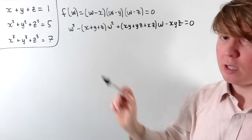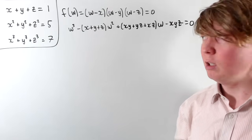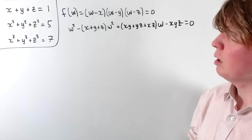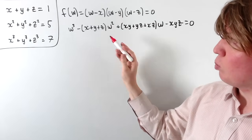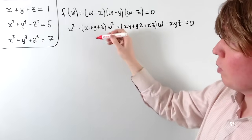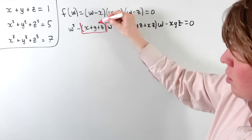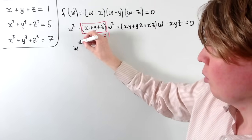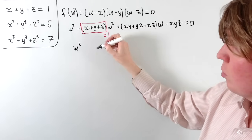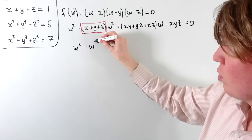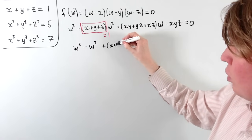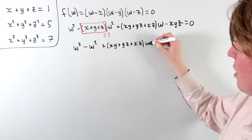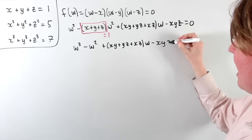How is this related to our system of simultaneous equations? We have x + y + z appearing here, and we know from the equations that x + y + z = 1. So we can simplify our cubic to: w³ − w² + (xy + yz + xz)w − xyz = 0.